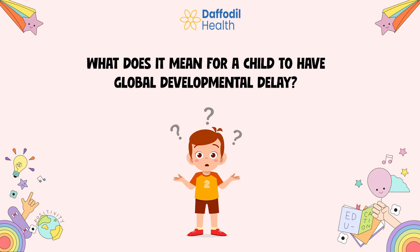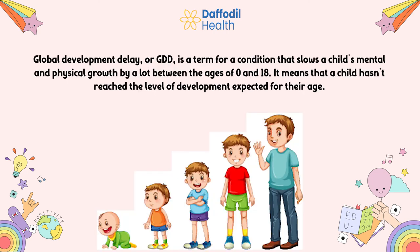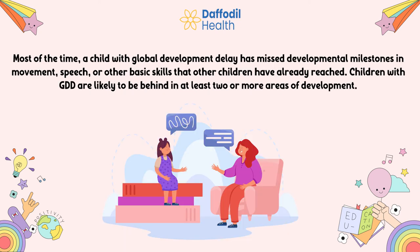What does it mean for a child to have global developmental delay? Global developmental delay, or GDD, is a term for a condition that slows a child's mental and physical growth by a lot between the ages of 0 and 18. It means that a child hasn't reached the level of development expected for their age. Most of the time, a child with global developmental delay has missed developmental milestones in movement, speech, or other basic skills. Children with GDD are likely to be behind in at least two or more areas of development.